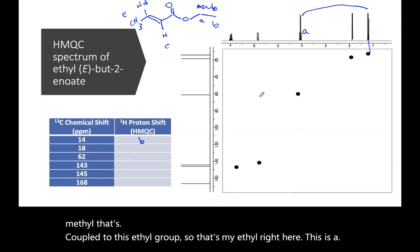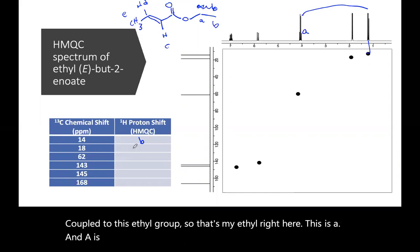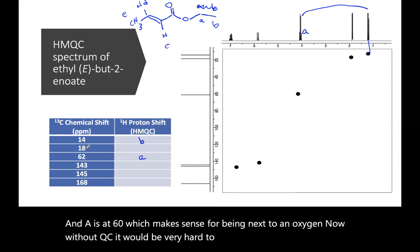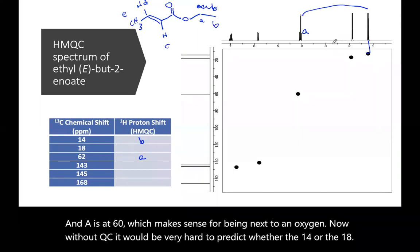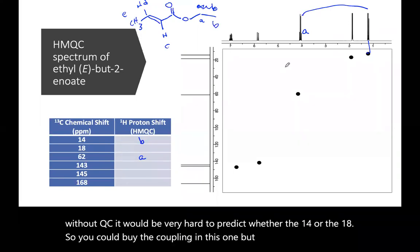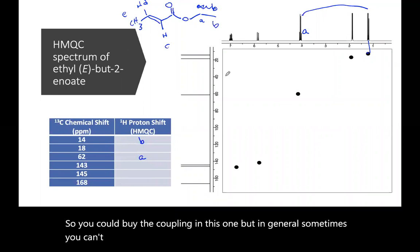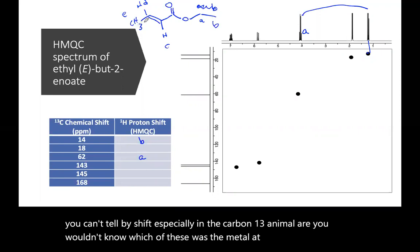Now without HMQC, it would be very hard to predict whether the 14 or the 18. You could by the coupling in this one, but in general, sometimes you can't tell by shift, especially in the carbon-13 NMR. You wouldn't know which of these was the methyl at this end versus the methyl at this end.